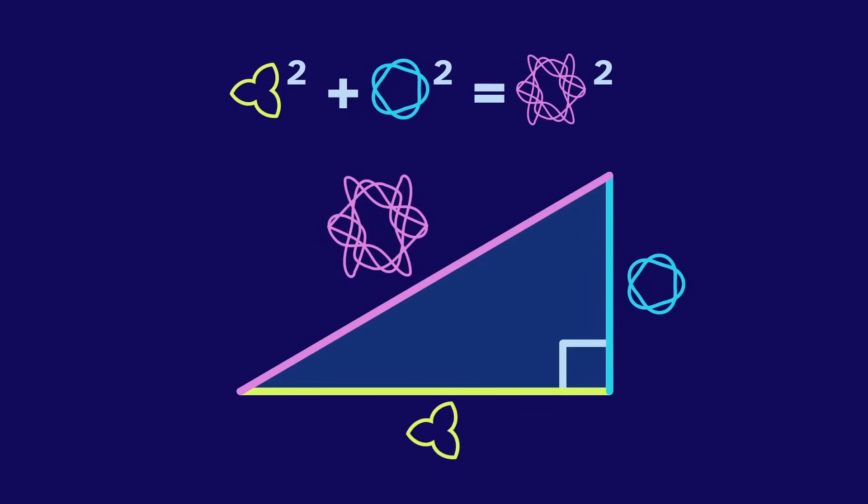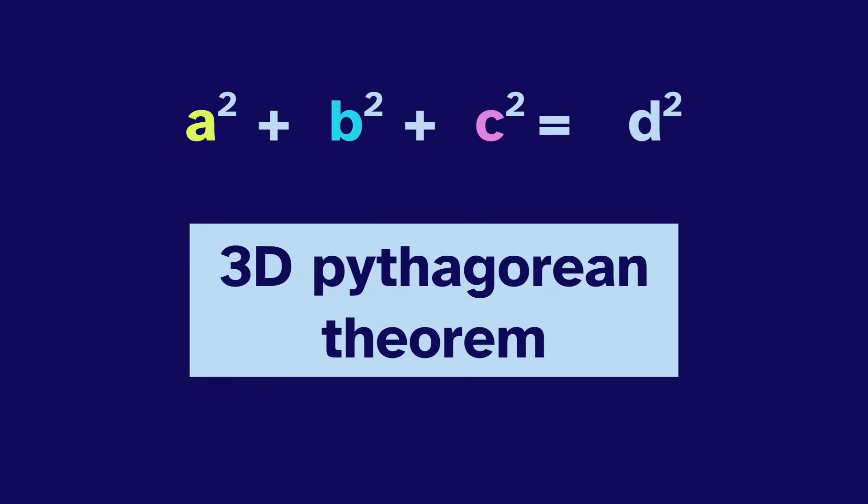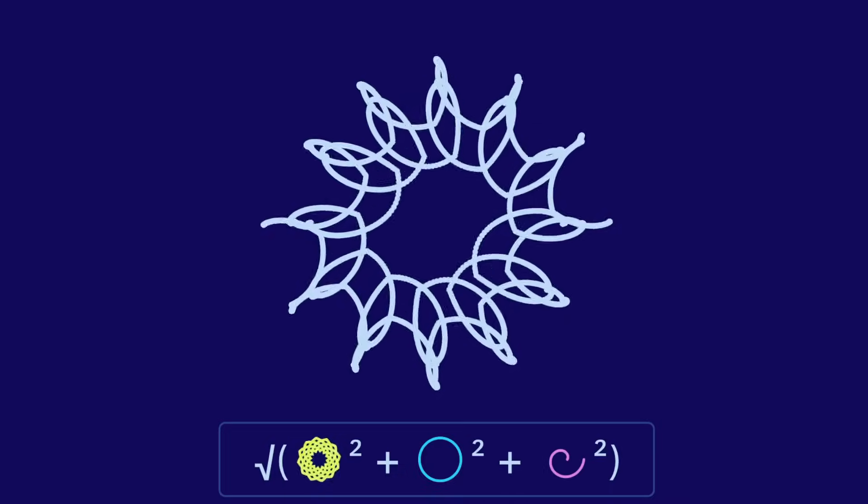But things get even more fun if we use the three-dimensional Pythagorean theorem, the relationship between sides of a pyramid. Now we can input three different shapes, and the results are mesmerizing.